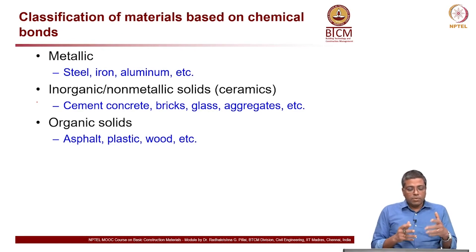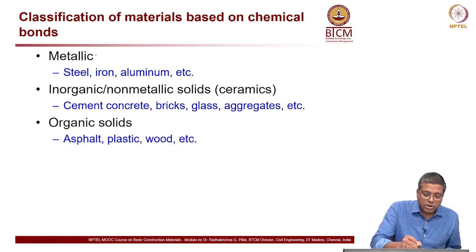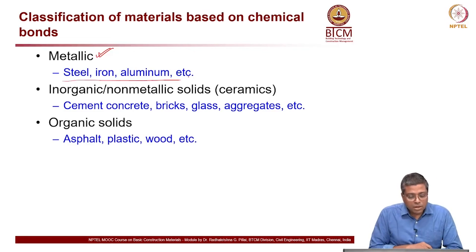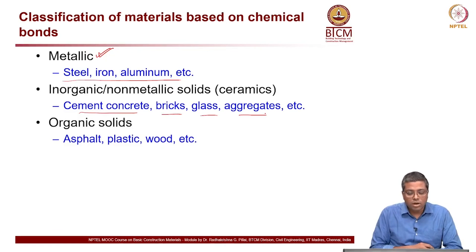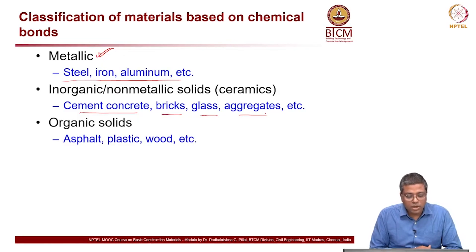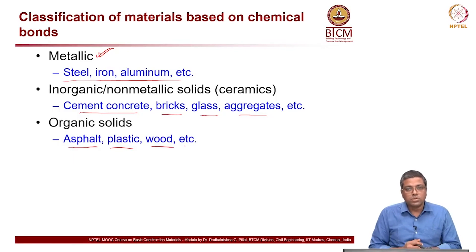We covered these different types of bonds, and materials can be classified based on the type of bonds present. For example, metallic materials — steel, iron, aluminum — have metallic bonds. Cement, concrete, brick, glass, and aggregates are all typically ceramic materials and have ionic or covalent bonds. Organic solids such as asphalt, plastic, and wood have different bond types. So different materials have different sets of bonds and their behavior is also very different.